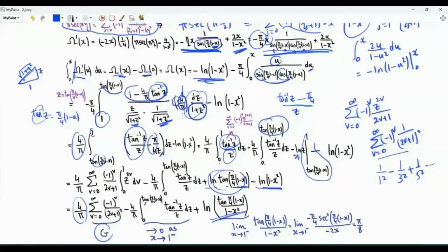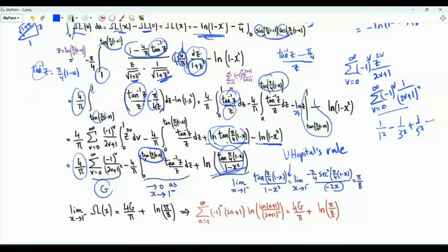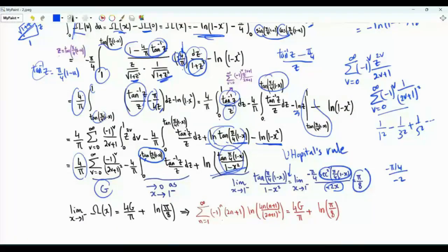To get the sum of interest we take the limit as x tends to 1 from below. When x tends to 1, the integral from 0 to tan tends to 0. The remaining term gives a 0 over 0 form, so we apply L'Hôpital's rule: the limit of the ratio equals the limit of the ratio of the first derivatives. Downstairs the first derivative is minus 2x; upstairs it is minus pi over 4 times the square of the secant of pi times 1 minus x over 4. As x tends to 1 we get minus 2 downstairs, and upstairs this is 1 times minus pi over 4, giving the limit pi over 8. Therefore the sum of interest is 4G over pi plus ln of pi over 8.